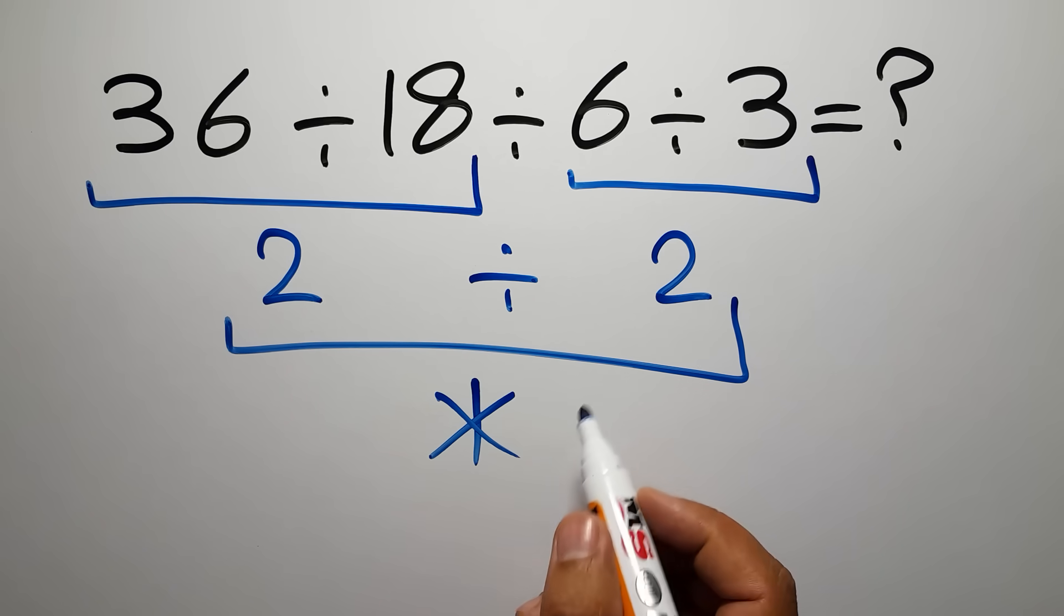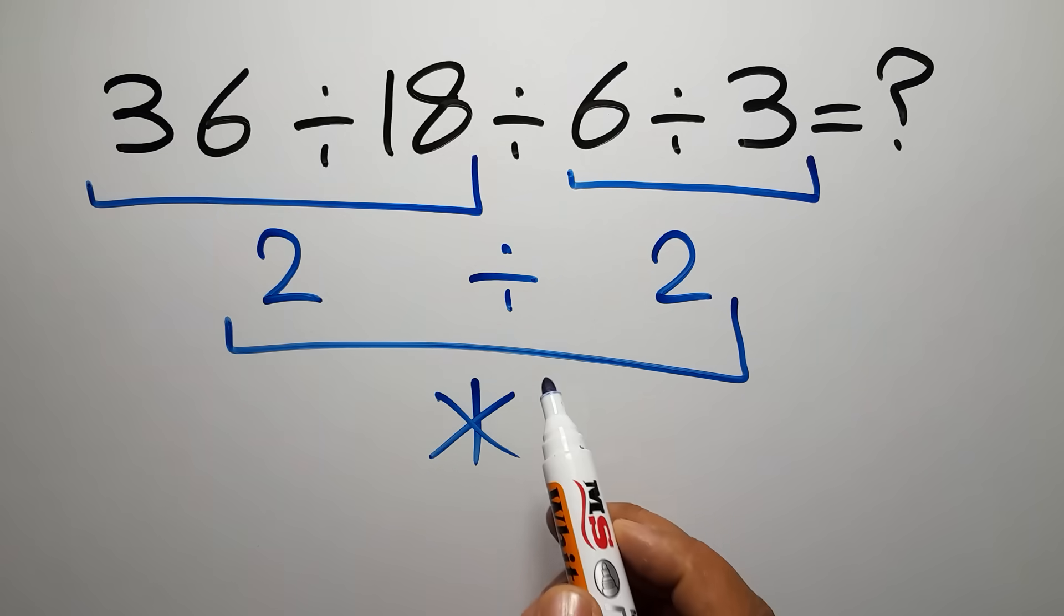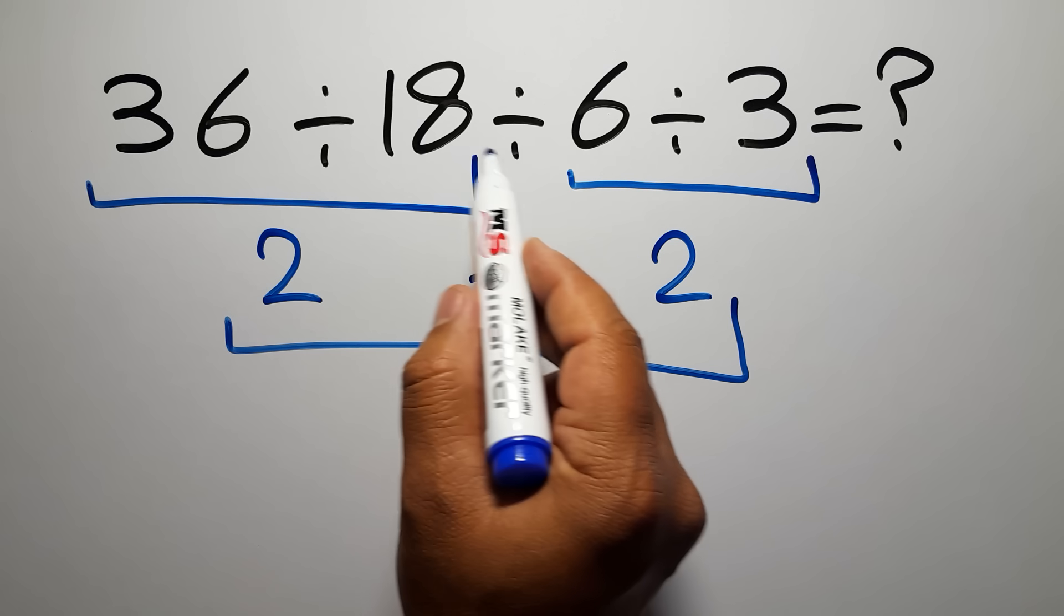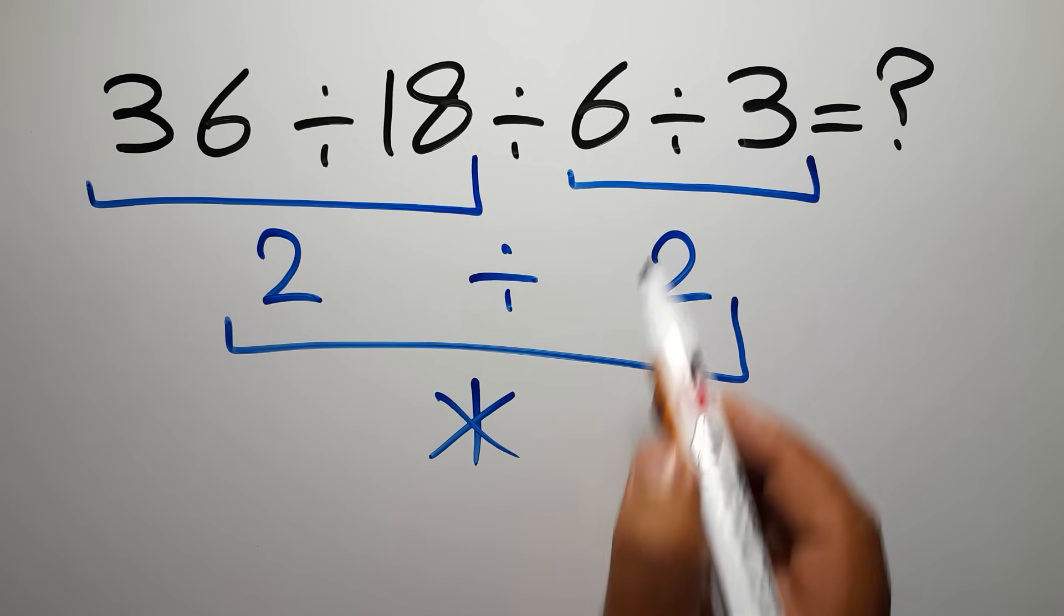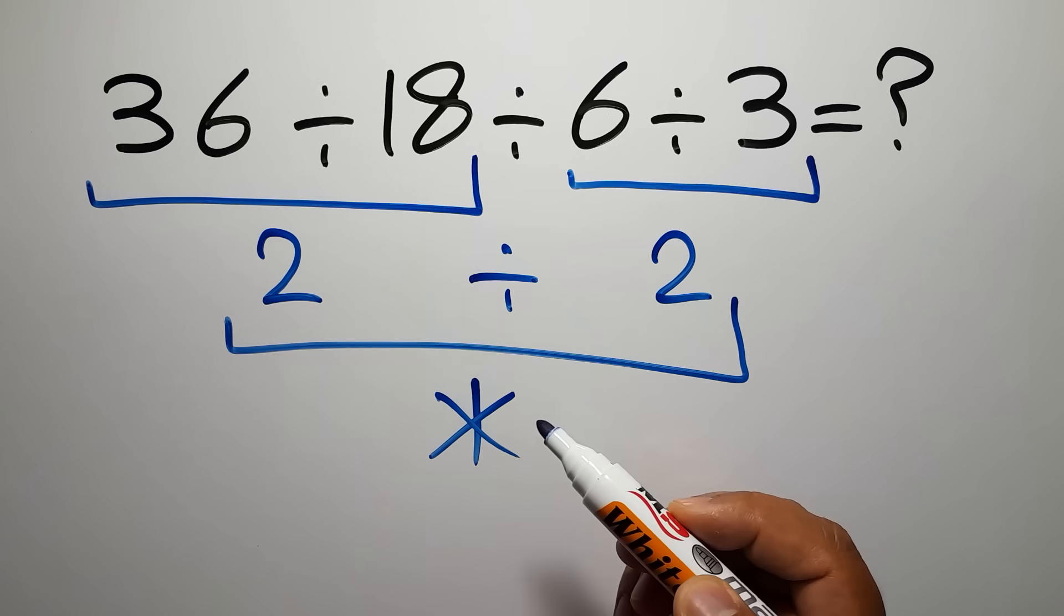when we have more than one division in an expression, we have to work from left to right. So first we have to do this division, then this division, and finally this division. If you do this division before this division, it is wrong.